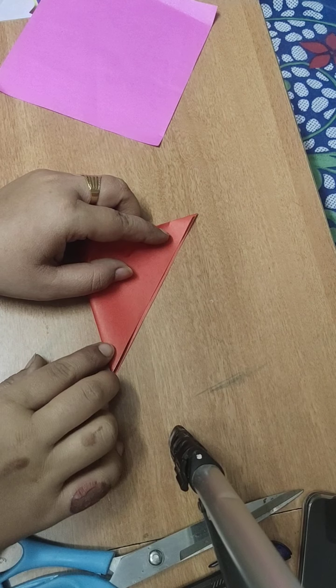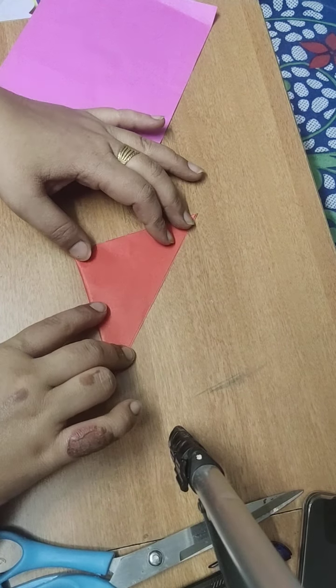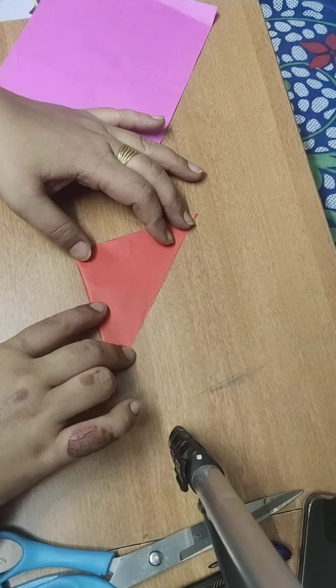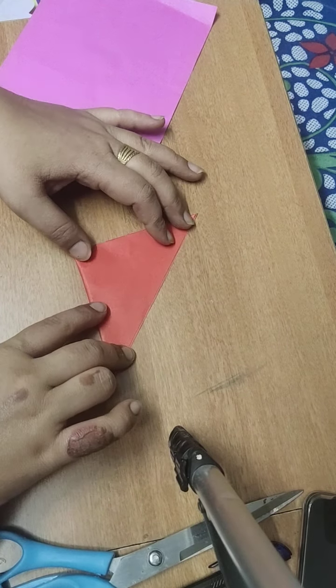When you fold it, you get no extra paper. When you fold the square paper in triangle shape, no extra paper is here, then it will be your square paper. This is the first fold.